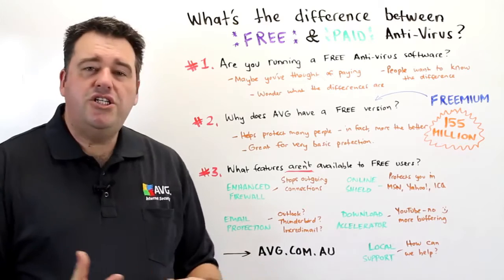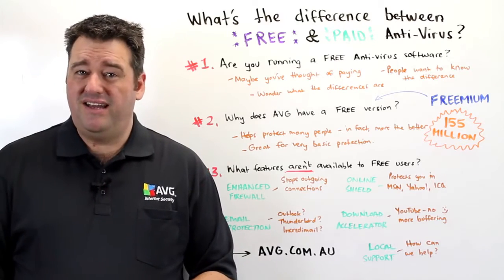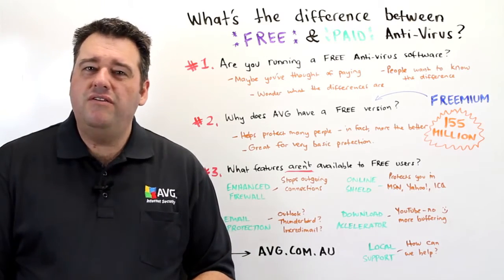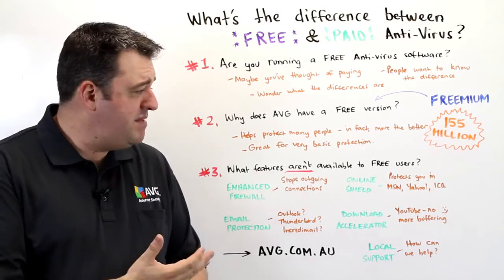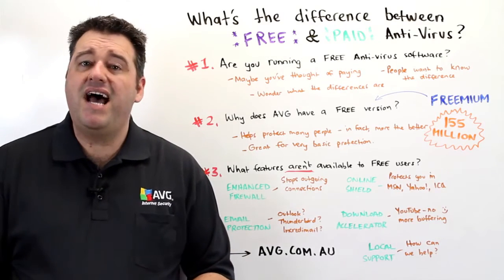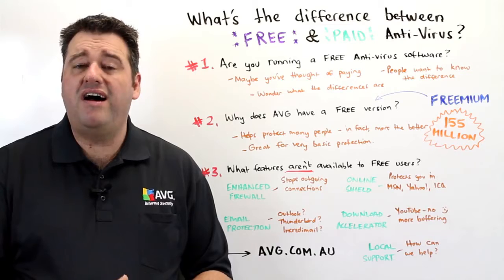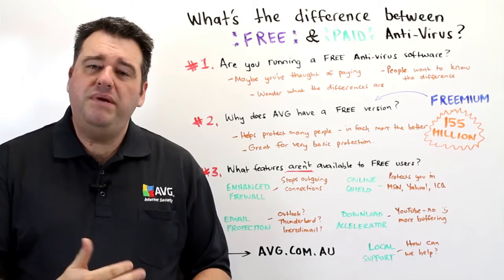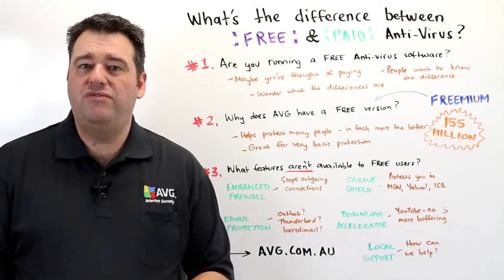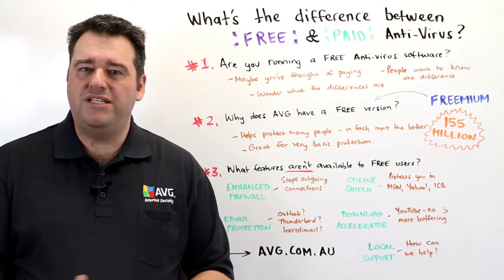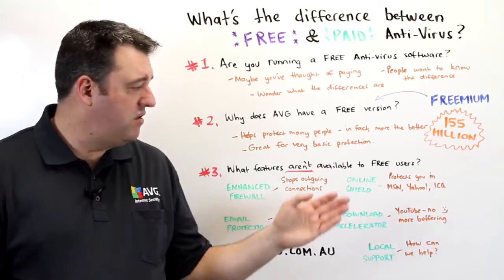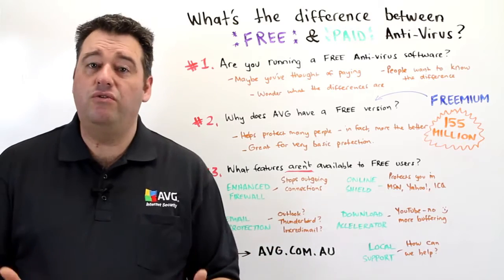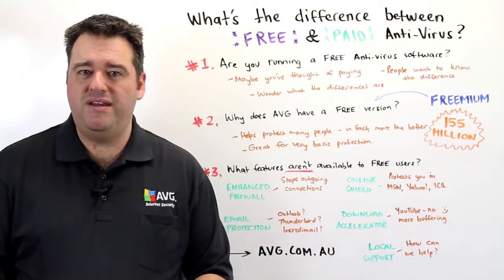With online shield functionality, if you're using for example MSN, Yahoo, or even ICQ chat, you could be sent malicious files from complete strangers, and the online shield affords you some protection there.